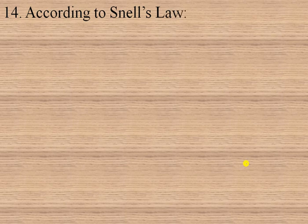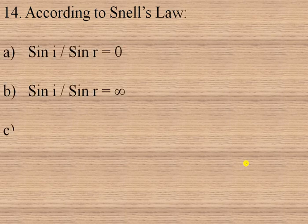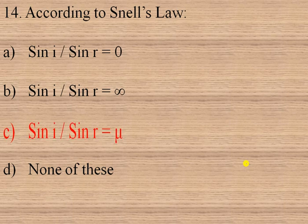The next question is according to Snell's law — we know sin i / sin r = mu. So option C is the right option.